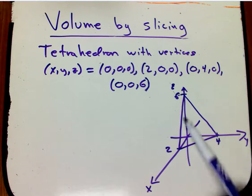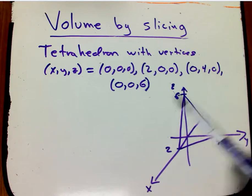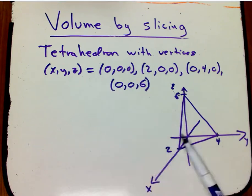It's got vertices at the origin in three-dimensional space. I've got x, y, and z-axes here. X is coming out towards us as a three-dimensional picture. So the origin, 0, 0, 0.